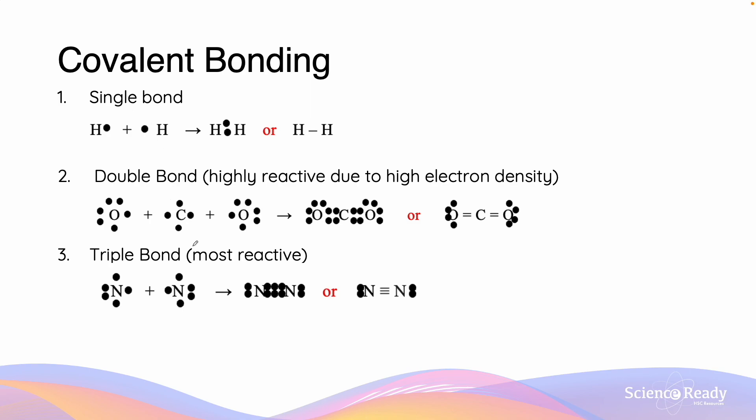The single bond, the double bond, and the triple bond. Let's have a deeper look at how the sharing of the electrons occurs.